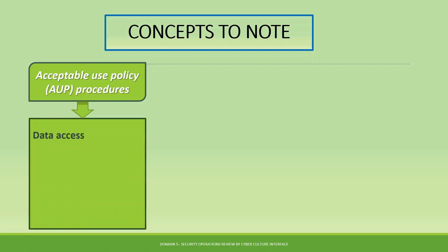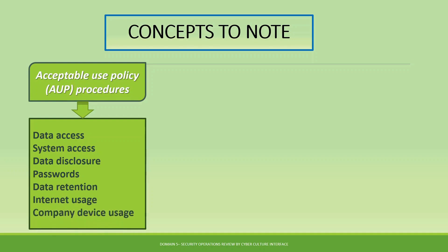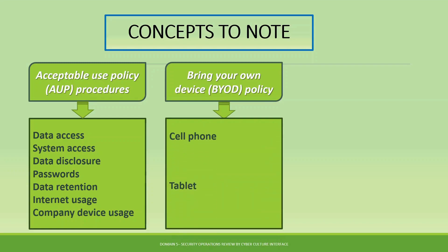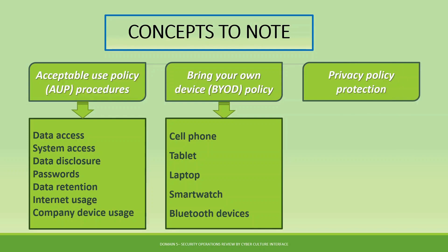Other policies to consider are acceptable use policy procedures, which cover how to handle data access, system access, disclosure of data, password use, data retention, internet usage — including which sites to browse and which to avoid — and company device usage. Bring Your Own Device policies can specify acceptable personal devices such as cell phones, tablets, laptops, smartwatches, and Bluetooth devices, guiding how users may use such devices within the organization.